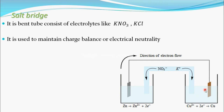In the reduction half-cell, since Cu²⁺ ions are depositing onto the copper rod as Cu, the remaining SO4²⁻ ions make that solution negatively charged. To maintain electrical neutrality and charge balance, the positively charged K⁺ ions from the salt bridge migrate towards this side. This is how the salt bridge maintains charge balance and electrical neutrality.